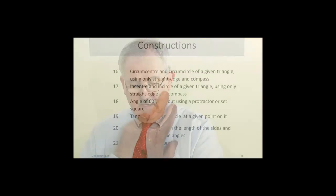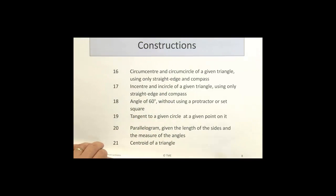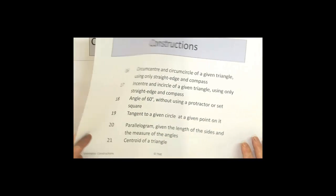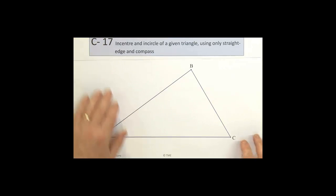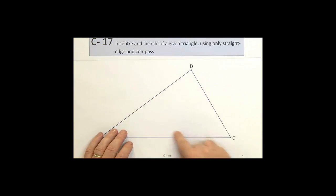We turn now to construction 17, the incenter and incircle of a given triangle, using only straightedge and compass. We're looking at creating the circle that's inside triangle ABC, with the incircle and the incenter in the middle.